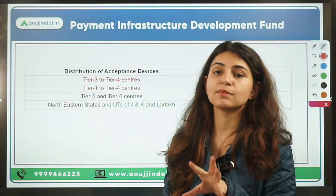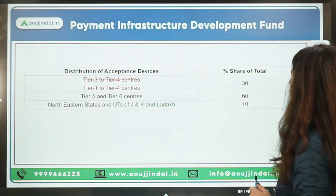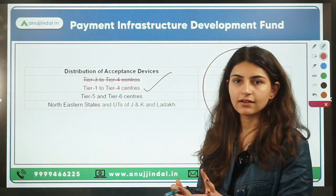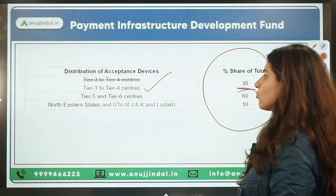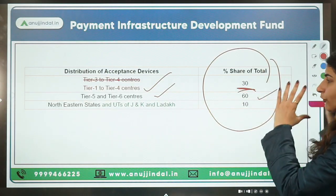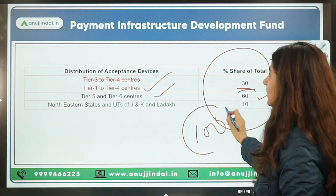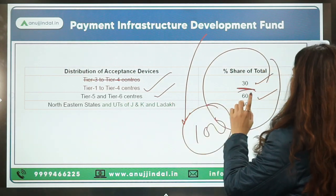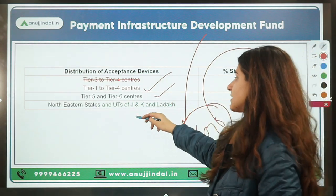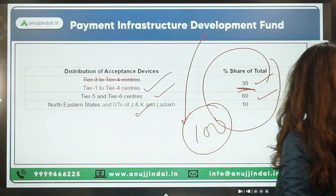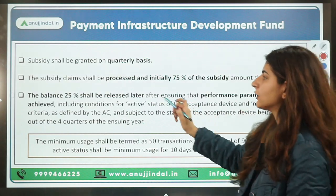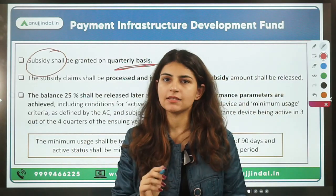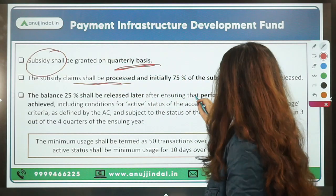Regarding target distribution: Tier 1 to Tier 4 centers receive 30% of the total share of payment infrastructure deployment; Tier 5 to Tier 6 centers and North East states and the UTs of Jammu & Kashmir and Ladakh receive 60%; and the remaining 10% covers other areas. The subsidy is provided on a quarterly basis and on a reimbursement basis.